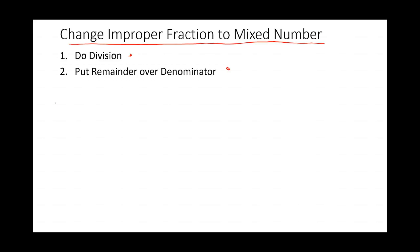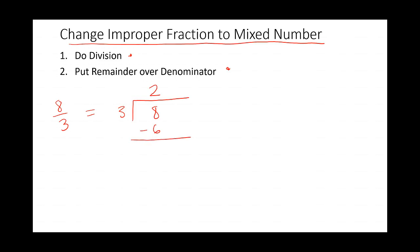Our example: we're going to take the improper fraction 8 over 3. We're going to do old-fashioned division — the denominator, old-fashioned division bar, and I'm going to write the numerator 8. I have to ask the question, how many 3's are in 8? 3 and 3 is 6, so there are two 3's in 8. That 2 is the whole number or integer part. 2 times 3 equals 6, and I subtract it to get the remainder. So 8 minus 6 gives me a remainder of 2.